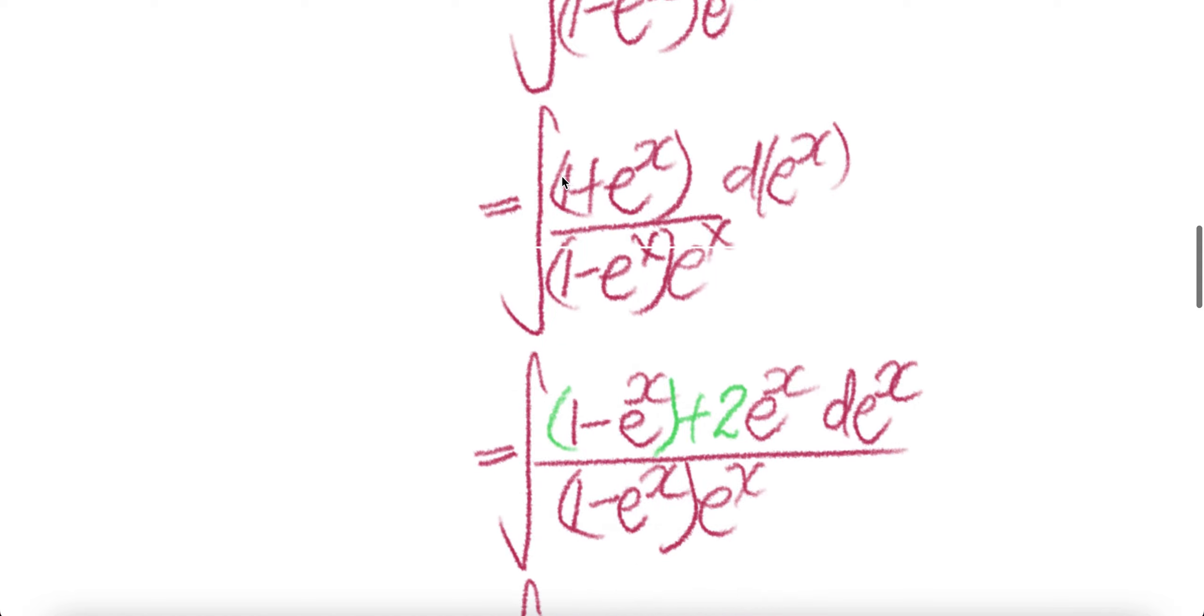Now we are going to express the upstairs, 1 plus e to the power x, in terms of a combination of 1 minus e to the power x and e to the power x. So we put 1 minus e to the power x and then e to the power x. Now we need to have e to the power x, so we put a 2 here minus 1 of e to the power x. Negative 1 e to the power x and positive 2 e to the power x, you get e to the power x. And then there's a 1 here. Basically this is the same thing as that.